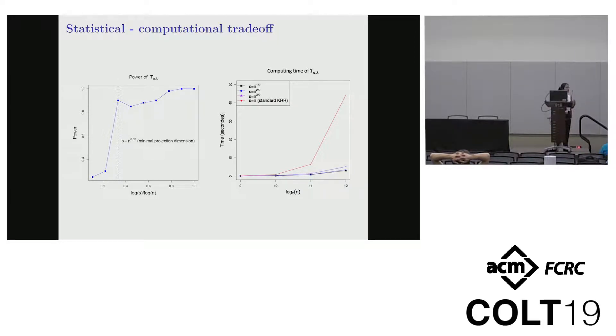As I have mentioned before, the projection dimension can be viewed as a proxy of the computing cost. Let's look at this part. It shows that the computing cost will decrease as long as the projection dimension decreases. This encourages us to use a lower projection dimension in our testing procedure. However, let's look at the power performance. It shows that if the projection dimension is too small, the power will perform badly. This implies there is a statistical and computational tradeoff. We aim to find the minimal projection dimension that can guarantee the statistical optimality in the sense of the power performance.